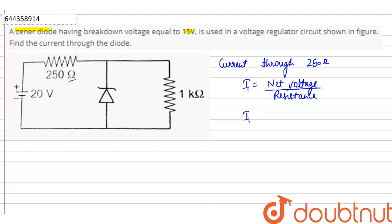So, I1 is equal to 20 minus 15 volts, that is breakdown voltage, upon resistance is 250. So, we got I1 is equal to I1 is equal to 20 milliampere.